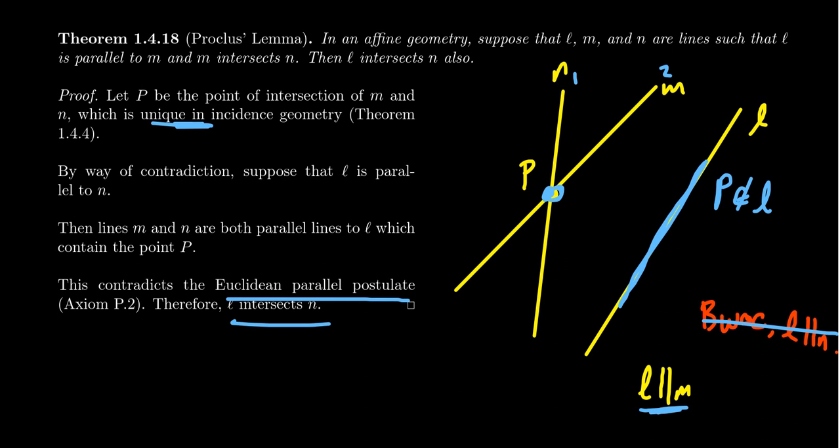I won't prove this in this video, but you can actually prove that in incidence geometry, Proclus Lemma is logically equivalent to the Euclidean parallel postulate, although EPP is what we assume as the axiom and we prove Proclus Lemma from it.